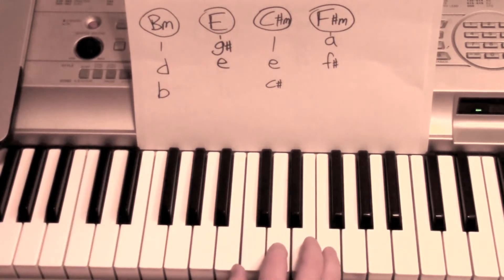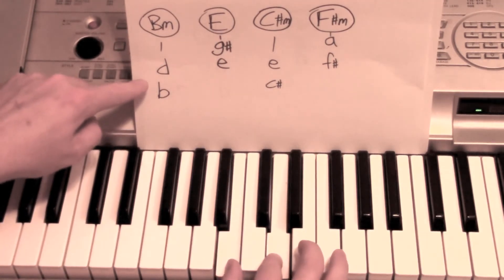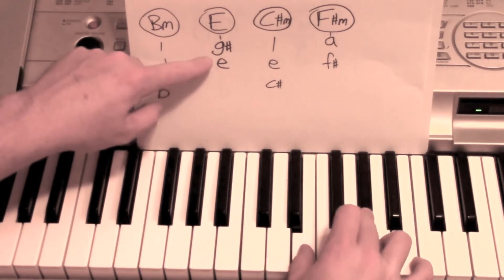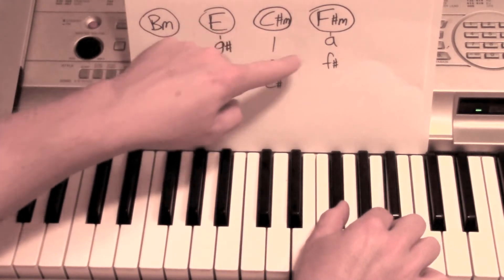Good. Alright, so here's what's happening. The right hand is playing a B and a D, to an E and a G sharp, to a C sharp and E, to F sharp and A.